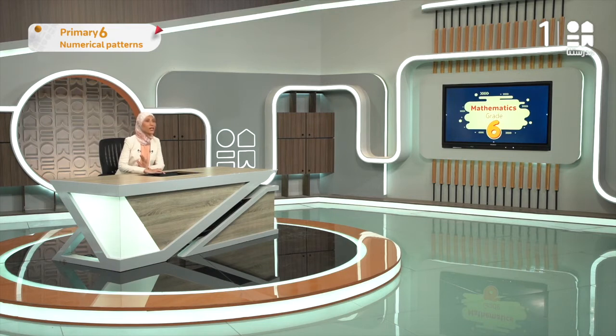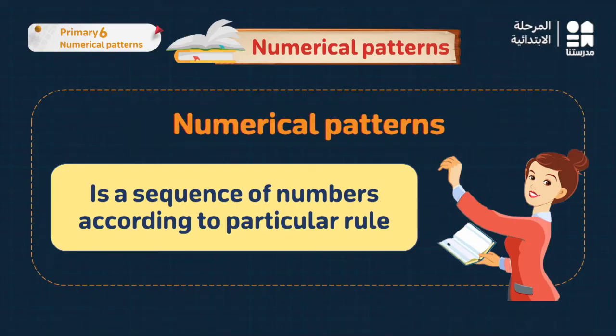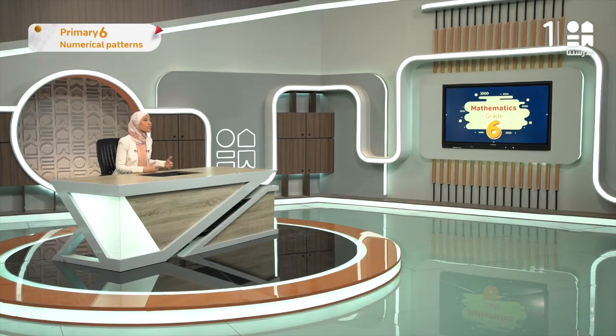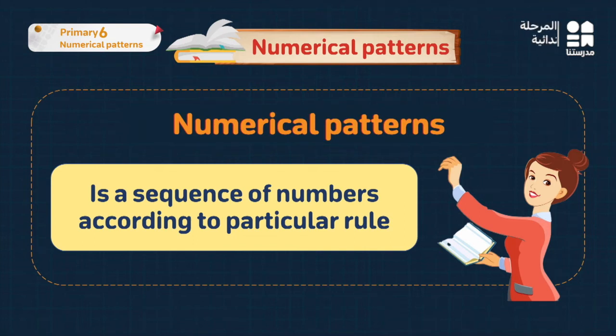The definition of a numerical pattern is a sequence of numbers according to a particular rule. These numbers are organized according to that rule — it's not the same rule for all patterns. Every pattern has its own sequence or rule. We're going to learn how to identify the rule of a pattern and do explaining and completing exercises. So: what is the definition of the pattern? A sequence of numbers according to a particular rule.